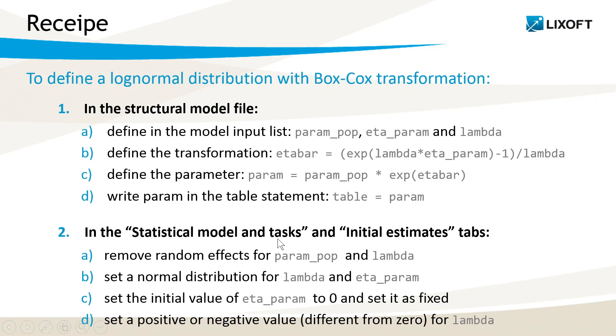And in the statistical model and task and initial estimates tab, we're going to remove the random effects for param_pop and lambda, set a normal distribution for lambda and eta_param, set an initial value for eta_param as 0 and set it as fixed, and finally set a positive or negative value for lambda different from 0.